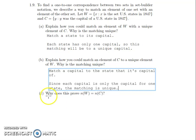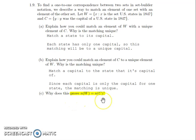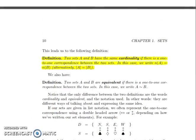Now we have to answer: why does this prove that the cardinality of W equals the cardinality of C? Because this has the word 'prove,' we need to look for a definition. The definitions are important — many questions ask about them because they matter. I need to find a definition relevant to 'cardinality equals cardinality.' Here is a relevant definition: two sets have the same cardinality if there is a one-to-one correspondence between the two sets.